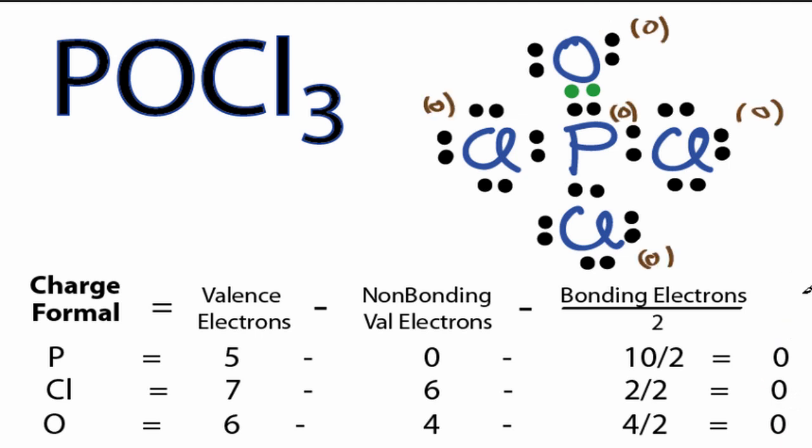By forming that double bond and having our formal charges all at 0, this Lewis structure for POCl3 is actually a better structure, a more stable structure, than the one that we previously had. So this is Dr. B, and thank you for watching.